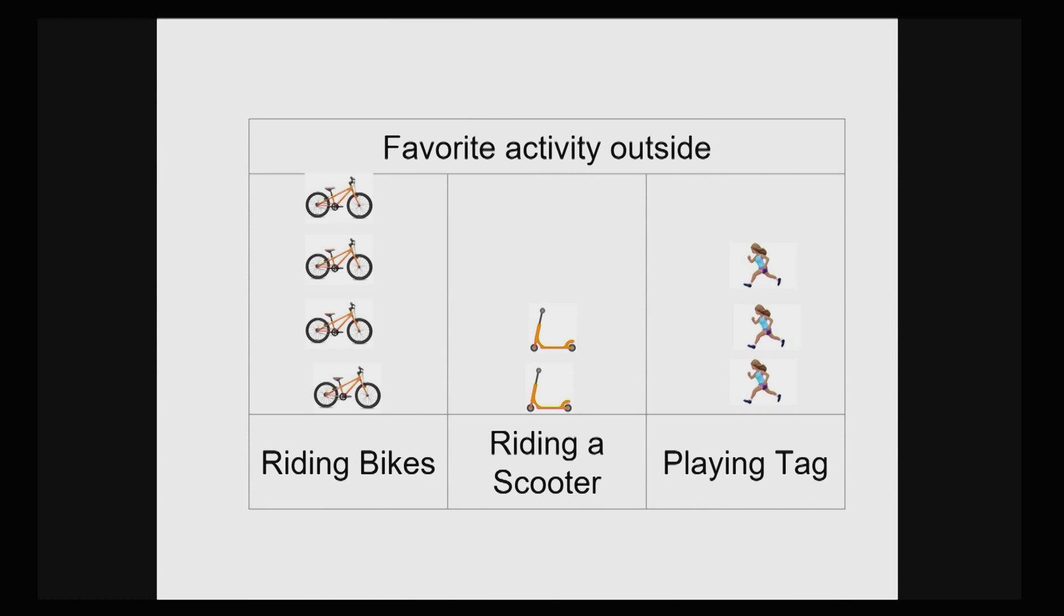At the top of the graph, you can see the title, Favorite Activities Outside. At the bottom of the graph, it shows favorite activities: riding bikes, riding a scooter, playing tag.